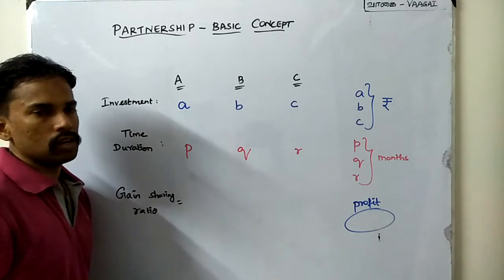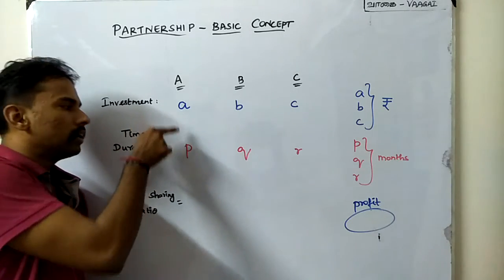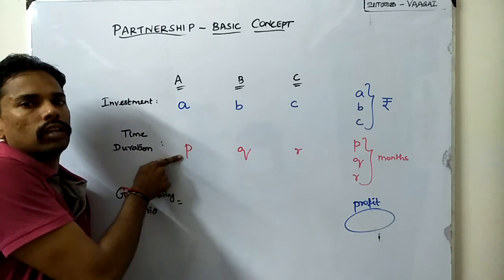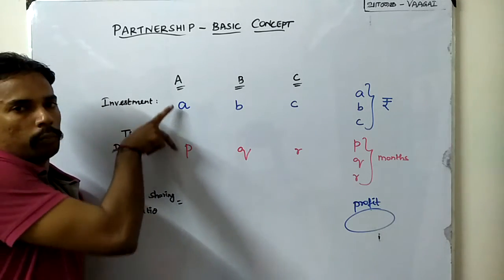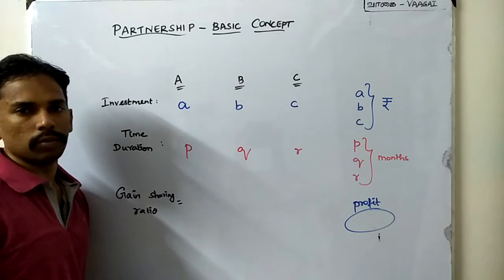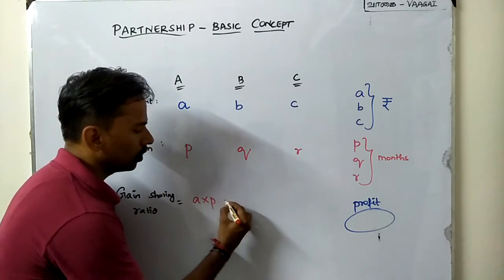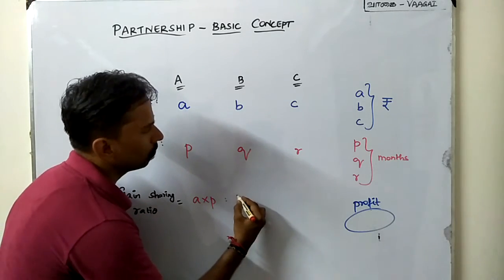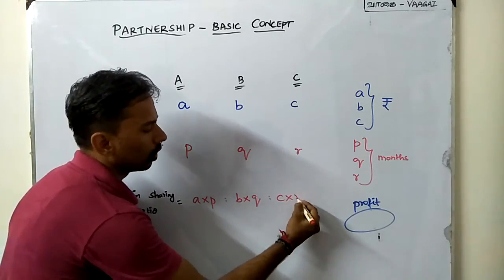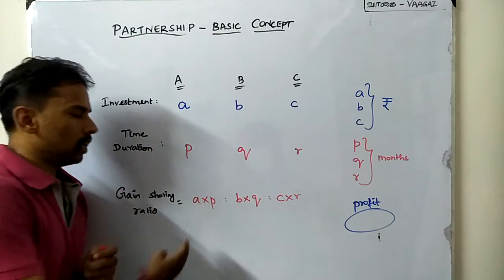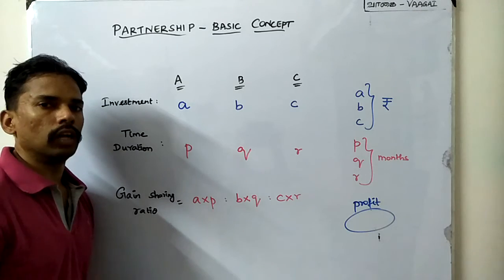To find the ratio, we take the investment amount and the time period for which their money is in the business, and we multiply the two components. So the ratio will be: for A it is a × p, for B it is b × q, and for C it is c × r. Therefore the ratio ap : bq : cr is the ratio in which they will be sharing the given profit.